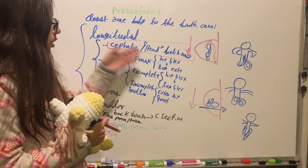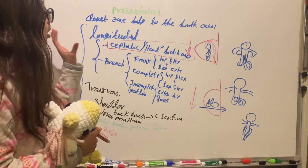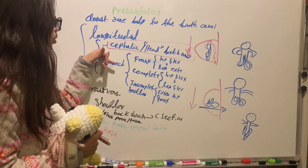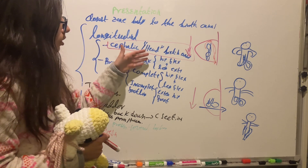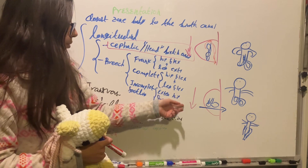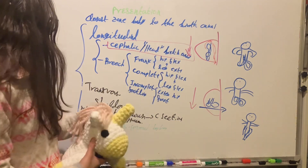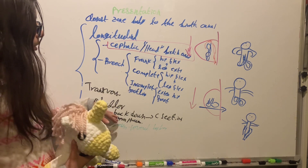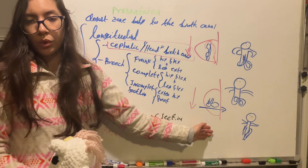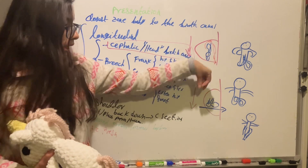In summary, presentations include cephalic, breech, shoulder, compound, and funic (cord) presentation. It's easier to organize these with orientation: longitudinal orientation gives cephalic or breech (frank — hip flexed, leg extended; complete — hip and leg flexed; or incomplete/footling — hip extended). Transverse orientation gives shoulder presentation. Compound presentation involves multiple fetal parts, and funic presentation involves the umbilical cord presenting through the birth canal.